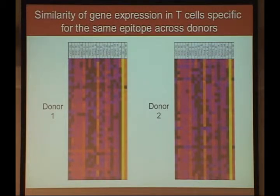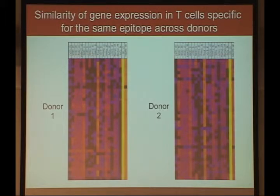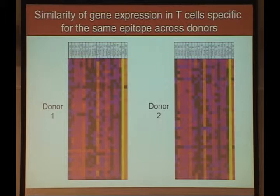Comparing donors one and two: though there were some failed reactions limiting the gene subset, the major highly-expressed genes are highly expressed in both donors. The positive controls are consistent, and the overall pattern is very similar between the two. A correlation plot confirms a significant correlation between the two donors' patterns. Across about 8–10 different A2-positive donors we've since tested, we typically see the same patterns with high correlation.